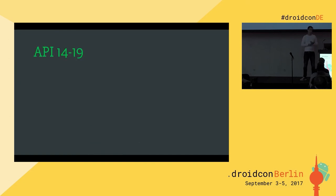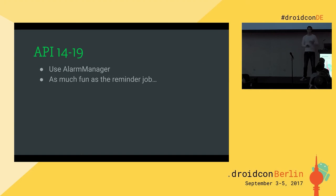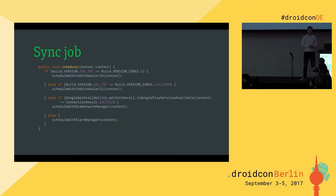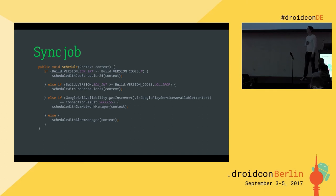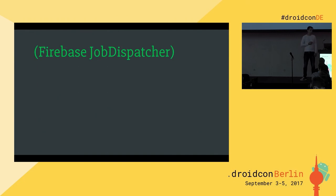So overall for the sync job: if on Android Nougat or above, use JobScheduler with the flex parameter; if on Lollipop and above, use JobScheduler without the flex parameter; below that, use the GCM Network Manager; and if Google Play Services aren't installed, use the AlarmManager as a fallback. And I promise it's as much fun as it was for the reminder job.